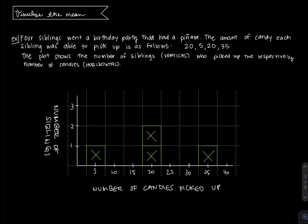It's the same example as in the previous video where the four siblings went to a birthday party that had a piñata, and the amount of candy each sibling was able to pick up is as described. The plot below shows the number of siblings in the vertical direction who picked up the respective number of candies in the horizontal direction.